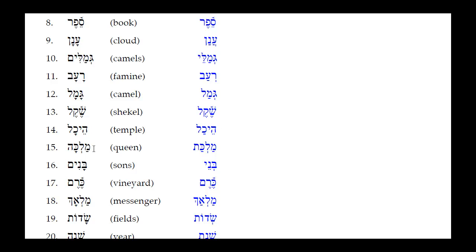Number fourteen: Malka — a Kamets He feminine noun. The He drops out, the Tav takes its place, and the Kamets reduces to a Patak. Result: Malkat. Number fifteen: Sharim — the Hirik Yod Mem Sofit drops off, a Seri Yod takes its place, and the Kamets under the first syllable reduces to a simple Sheva (open unaccented syllable). Result: Sharei.